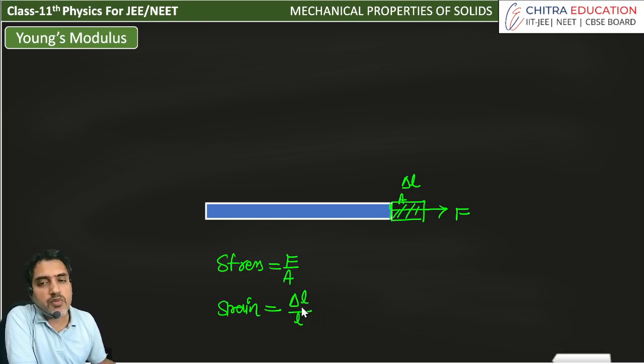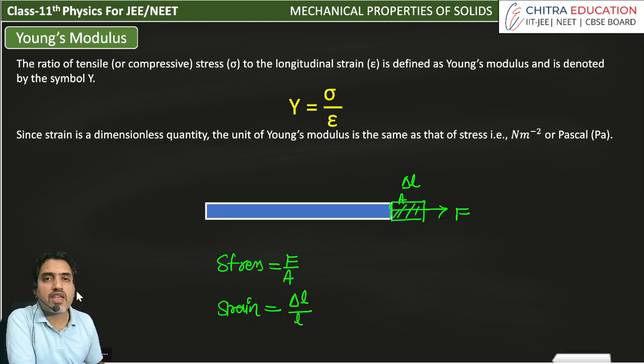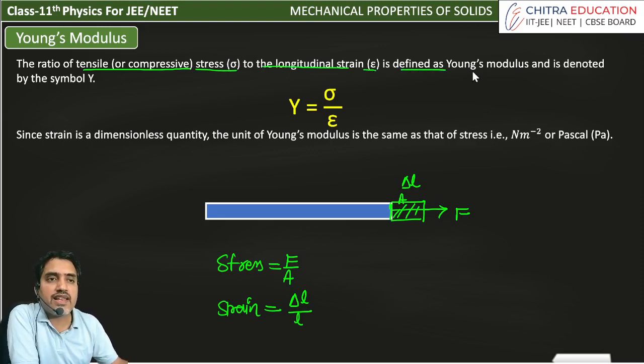And we will state directly the proportionality relation of Young's modulus. So the definition of Young's modulus is the ratio of tensile or compressive stress sigma to the longitudinal strain, and is denoted by Y. Y is equal to sigma by epsilon.